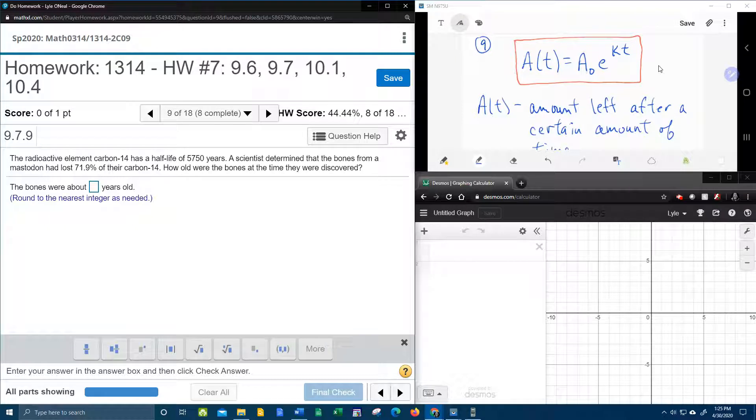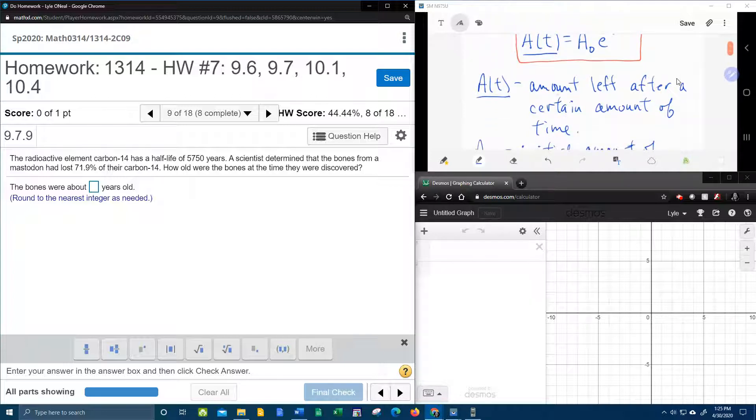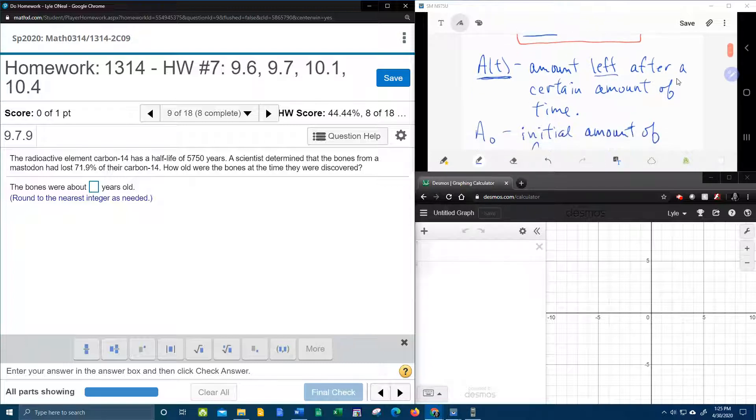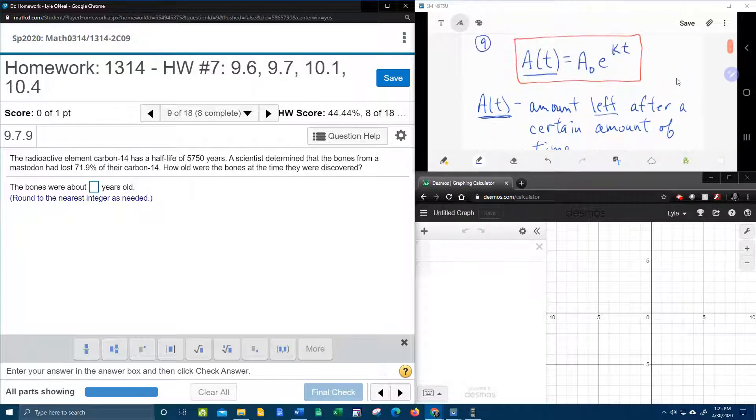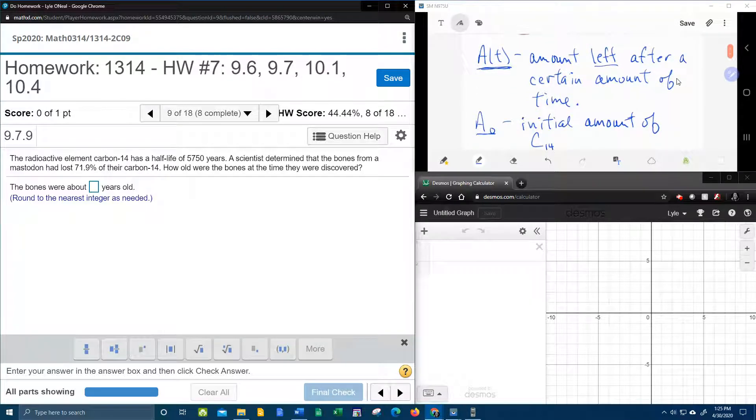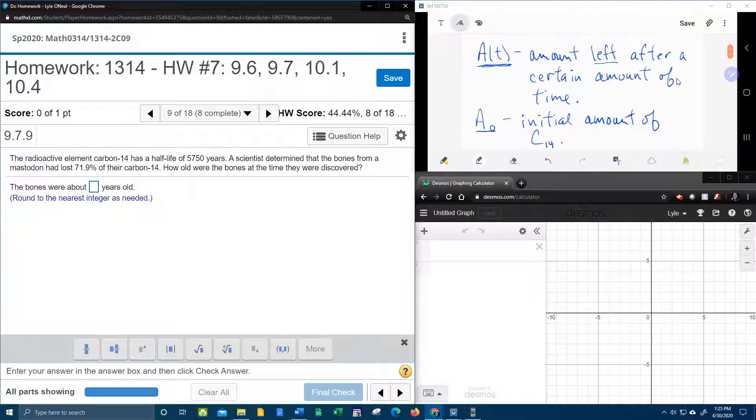So what I've got over here is our generic growth or decay formula. And I thought it was important to go through and list each one of the pieces so that you know what they represent. So first of all, we've got our A(t). And A(t) is the amount of stuff left after a certain amount of time. So in this case, A(t) represents the amount of carbon-14 left, in other words remaining, after a certain amount of time. A-naught, the A with the little subscript zero, is pronounced A-naught. And it is the initial amount of stuff. Here in this case, it's the initial amount of carbon-14. That means how much carbon-14 was present initially before the mastodon died.